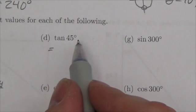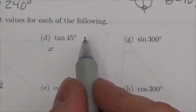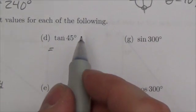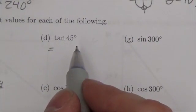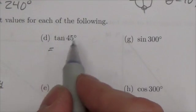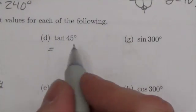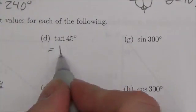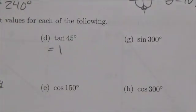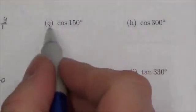Tangent of 45 degrees: 45 degrees is in the first quadrant. Tangent equals the y-coordinate over the x-coordinate on the unit circle, or using special triangles the answer is clearly just 1.